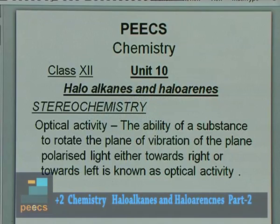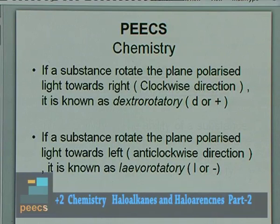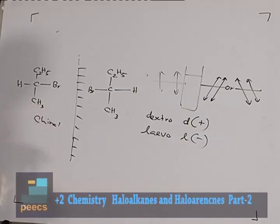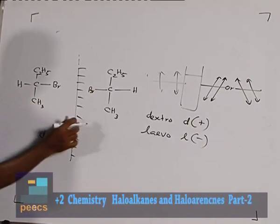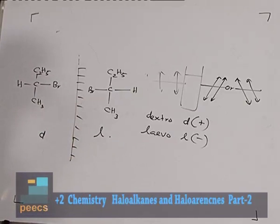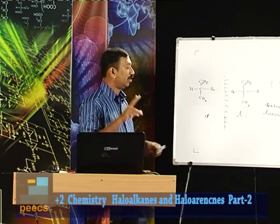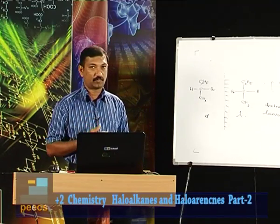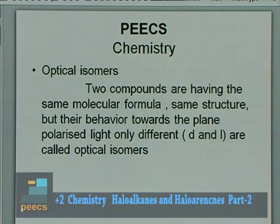Optical activity is the ability of a substance to rotate the plane of vibration of plane polarized light either towards right or towards left. If it is towards right it is dextro, and towards left it is levo. Optical isomers: one isomer is dextro and its pair is levo. With the same molecular formula and same structure, there are two isomers — one dextro and one levo. Two compounds having the same molecular formula and same structure but different behavior towards plane polarized light are called optical isomers.